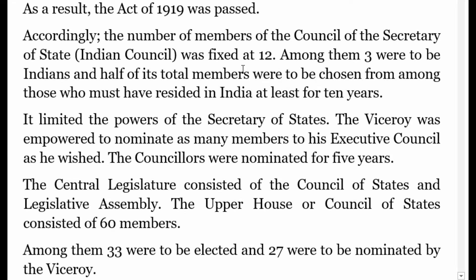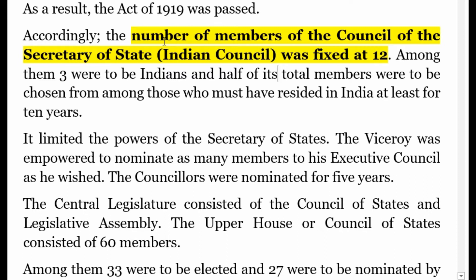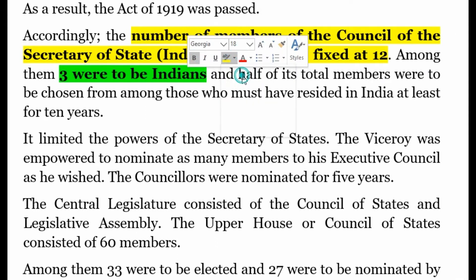In this reform, the number of members of the Council of Secretary of State — the Indian Council — was fixed at 12. This was a form of representative government brought by the British so that Indians could agree with the British and allow them to continue ruling. Out of the 12 members, three were Indians.